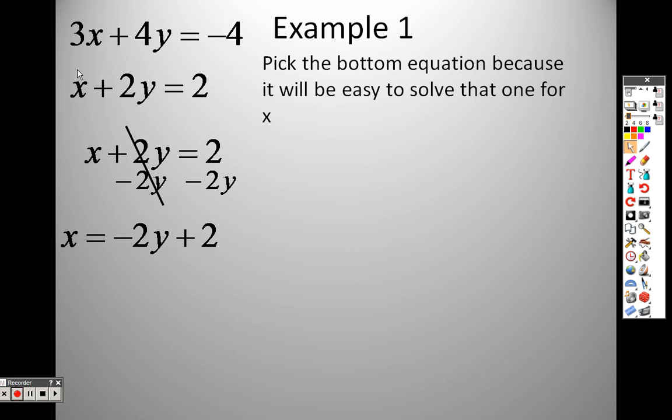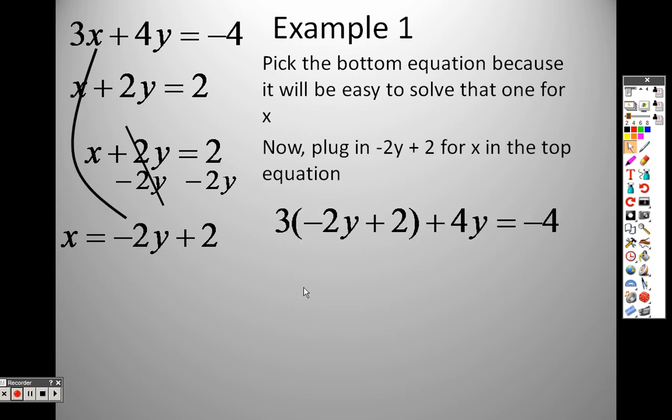So now, because I switched into this down here, x equals negative 2y plus 2, I can take this value and plug it in for x right here. So I take this, I'll plug it in there for x, and I have this big, huge, long thing. Now, even though that thing is big and long, and even though we have the distributive property, and it might take a little bit of time, at least we only have one variable, so I can figure out now what y is.